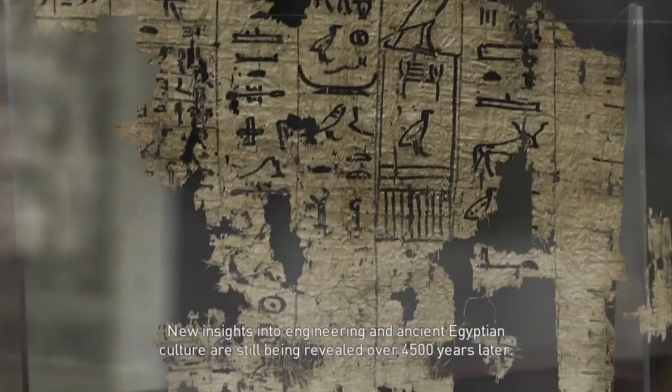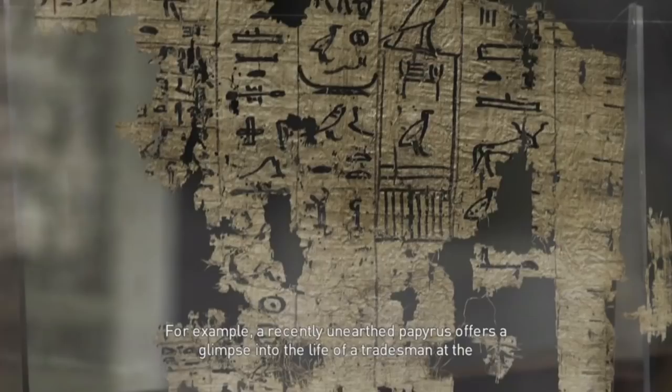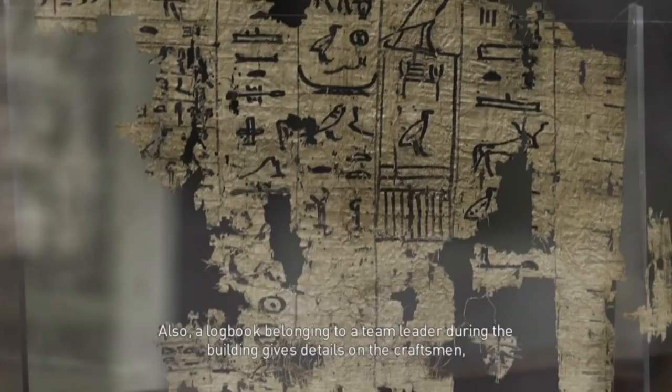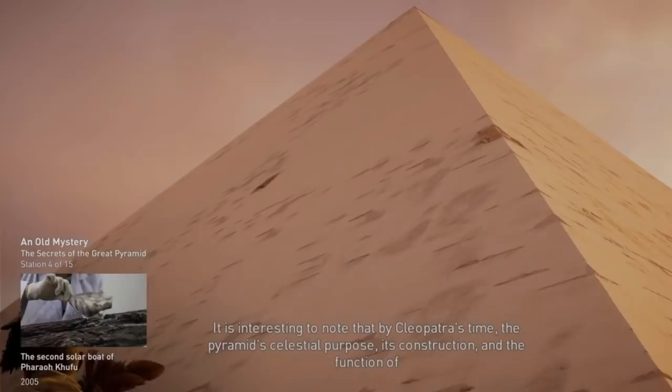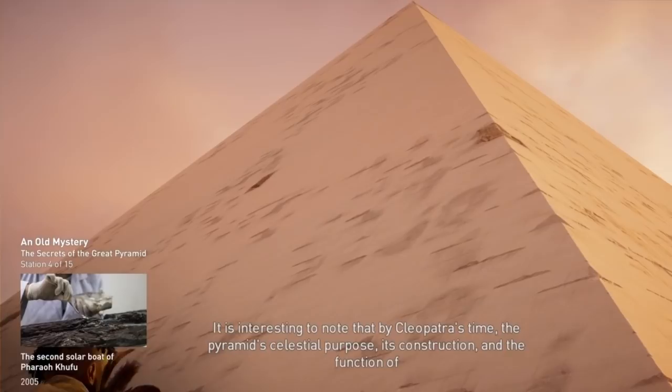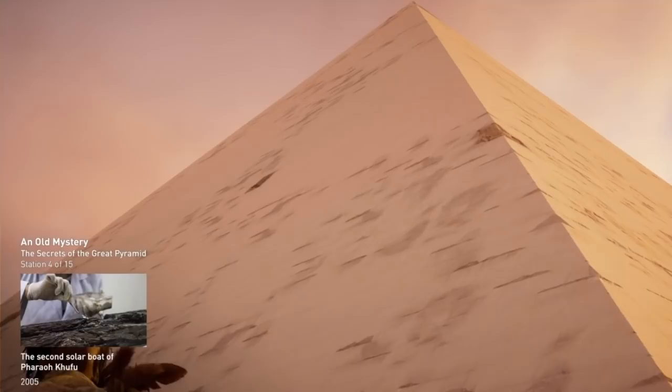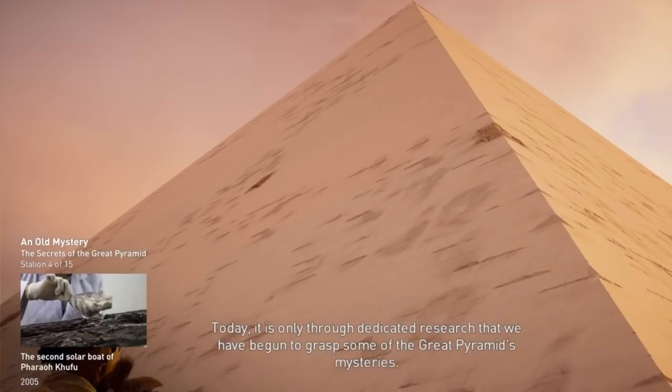New insights into engineering and ancient Egyptian culture are still being revealed over 4,500 years later. For example, a recently unearthed papyrus offers a glimpse into the life of a tradesman at the time of the pyramid's construction. Also, a logbook belonging to a team leader during the building gives details on the craftsmen, their work schedules, and the raw materials required. It is interesting to note that by Cleopatra's time, the pyramid's celestial purpose, its construction, and the function of its mysterious inner chambers was already unclear. Today, it is only through dedicated research that we have begun to grasp some of the Great Pyramid's mysteries.